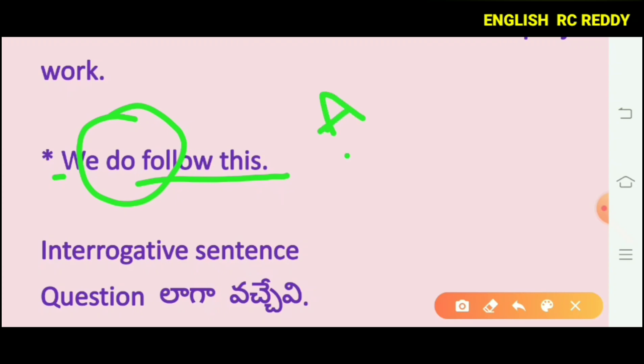The three subtypes of assertive sentences are: affirmative, negative, and emphatic.